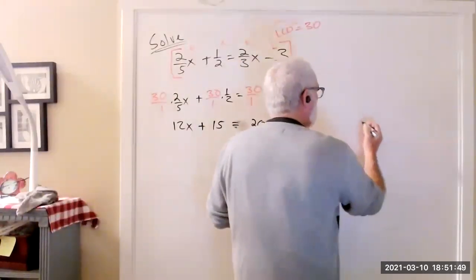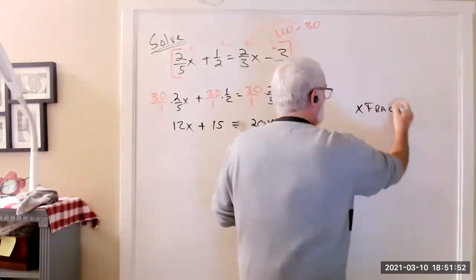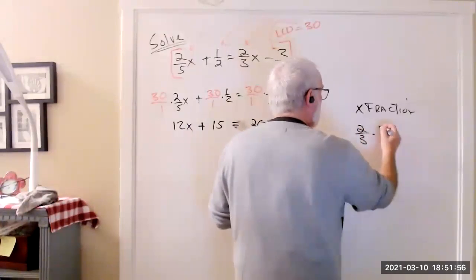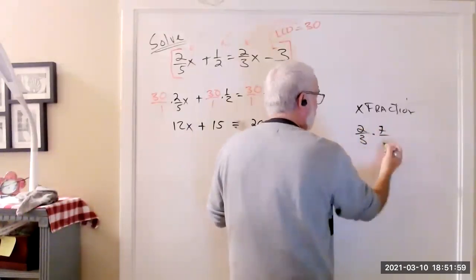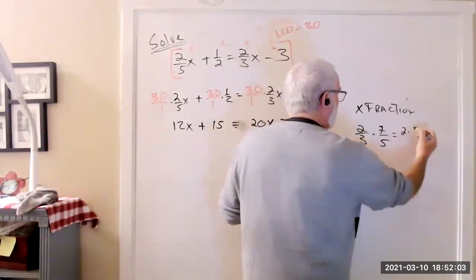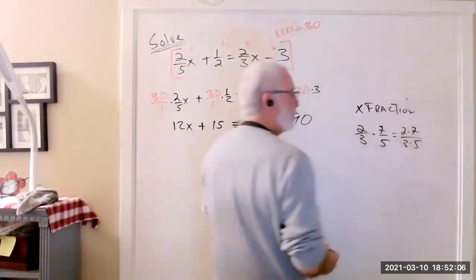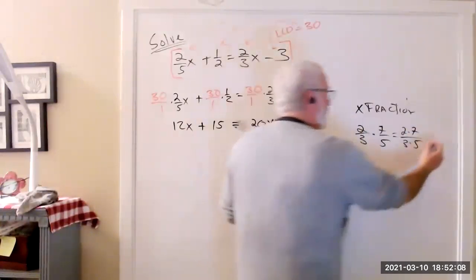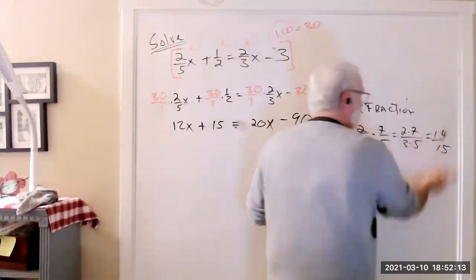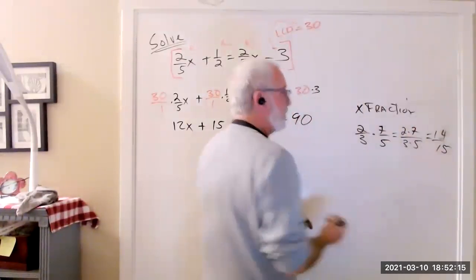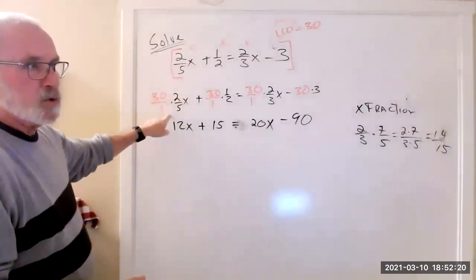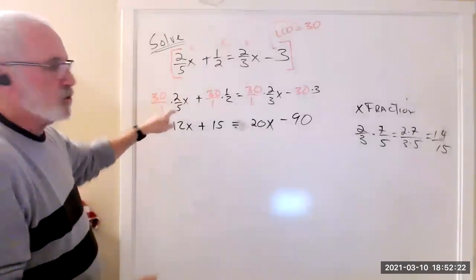When you want to multiply fractions — for example, 2 thirds multiplied by 7 over 5 — you really do multiply 2 times 7 over 3 times 5, and get 14 over 15. Sometimes you can reduce them, sometimes you can't. All we're really doing is the basic rule for multiplying and reducing fractions.